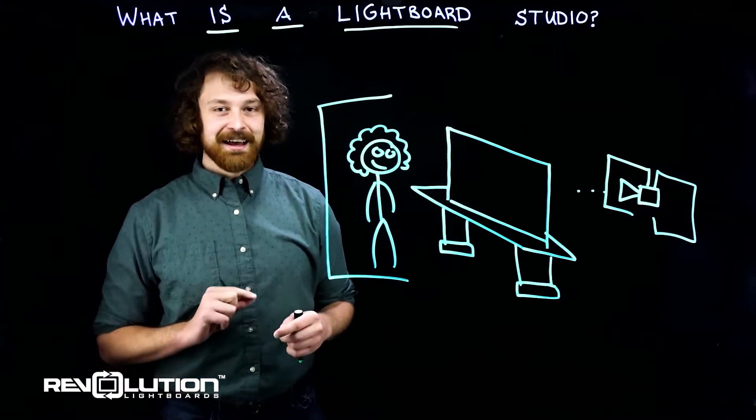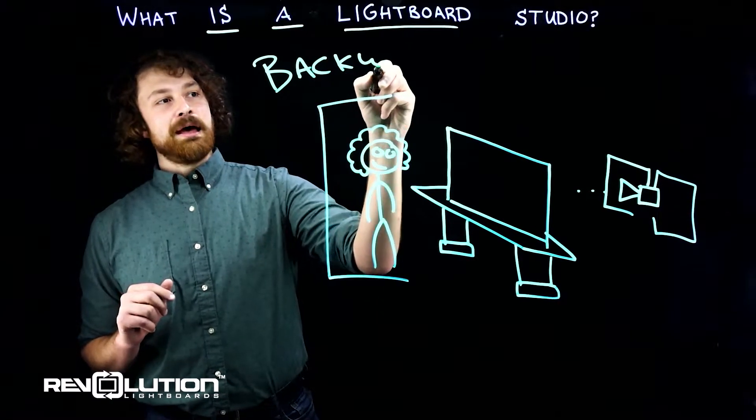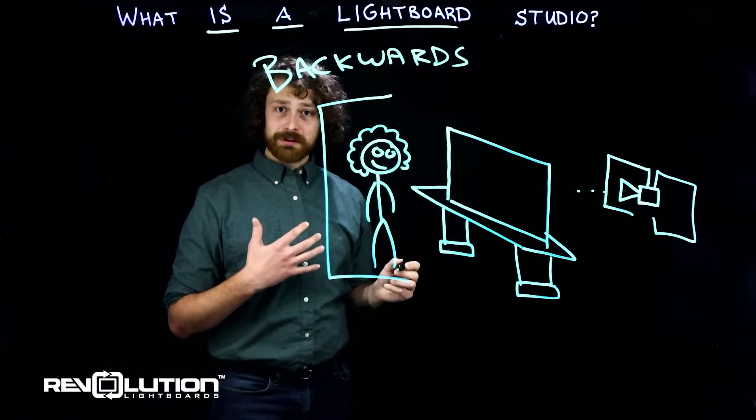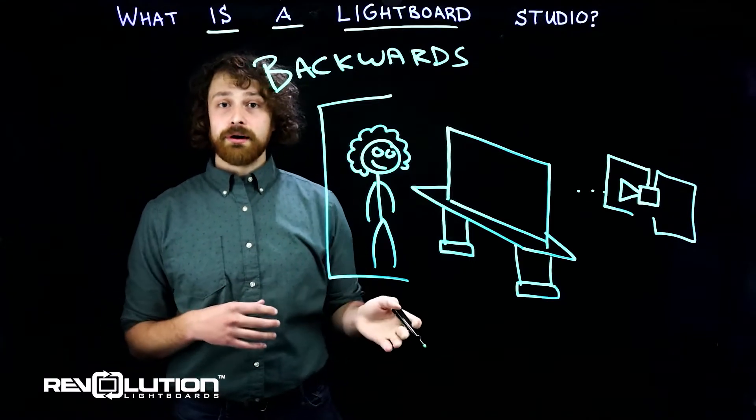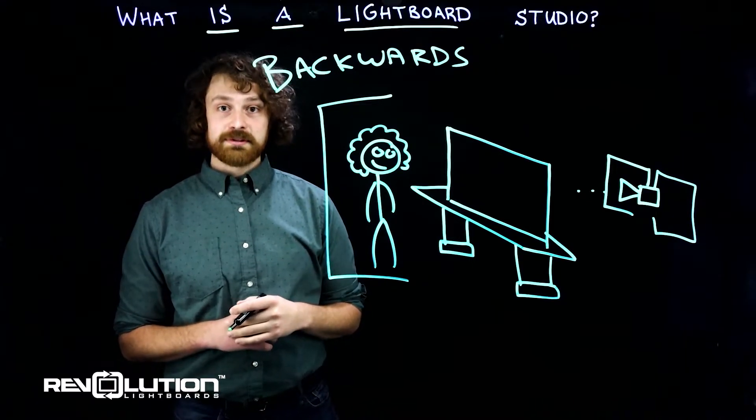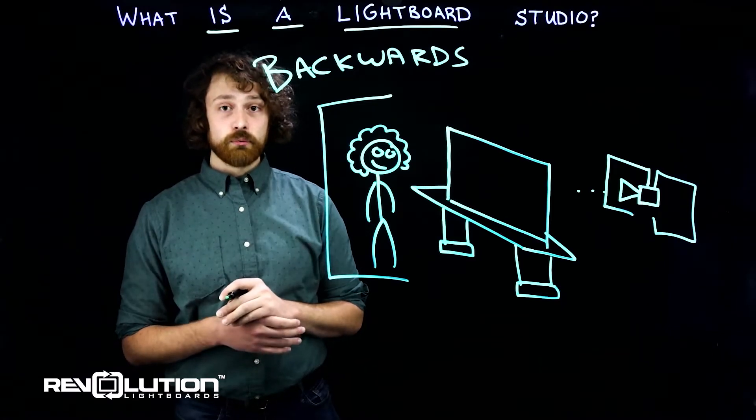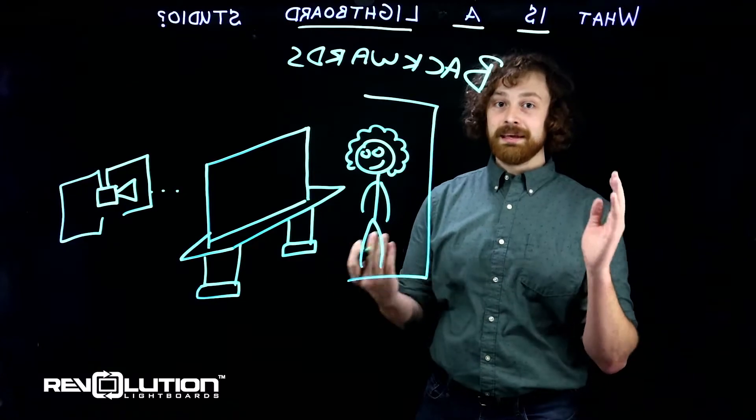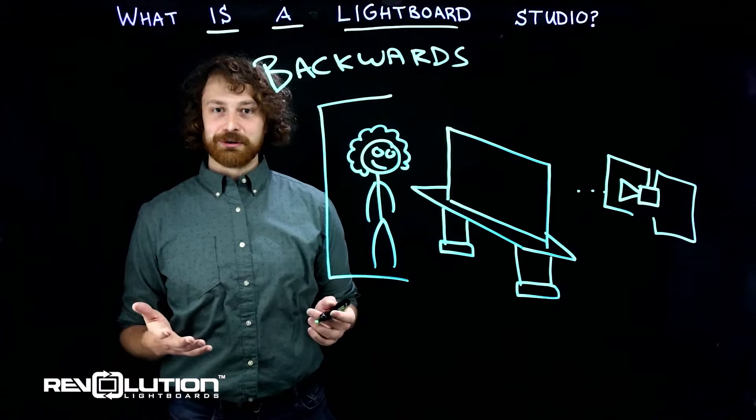Now one question that we get a lot is: do you have to learn how to write backwards? Because it would seem to make sense that if you're shooting through the glass it should be backwards. Well, either through software or hardware depending on our studio systems, we have a left-right flip that mirrors the image, so there's no reason to have to learn how to write backwards.